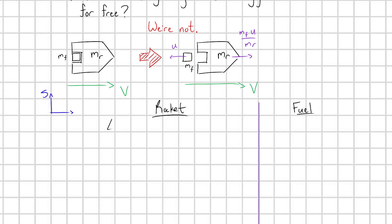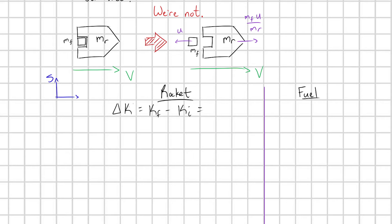So for the rocket, its change in kinetic energy delta K is going to be K final minus K initial. And so what's the final kinetic energy of my rocket? Just one half times M sub R times. What's its final velocity? Well, it's capital V plus this additional MFU over MR. And that's squared minus one half M sub R. And of course, its initial velocity is just this V here squared.